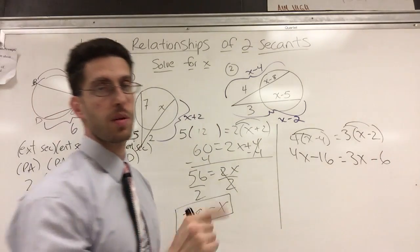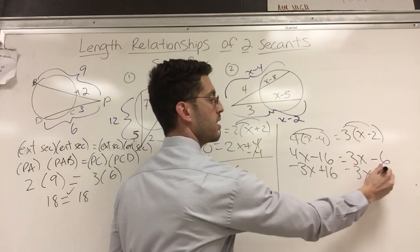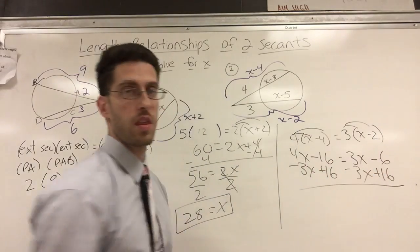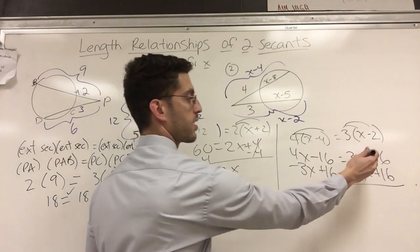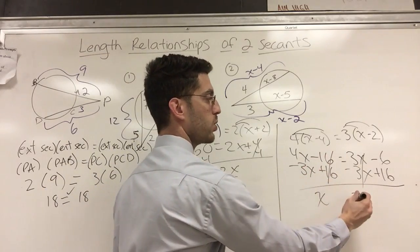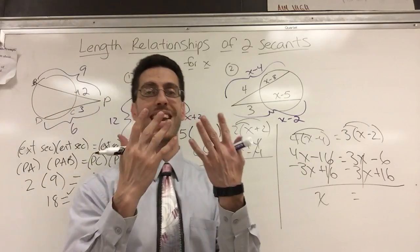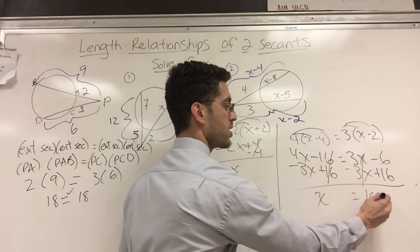We'll do this in one step instead of 2. We'll subtract 3x on both sides here. I'm going to add 16 on both sides there. What's the point of that? Let's get x alone. 4x minus 3x is 1x. 16 cancels. Equal sign drops down. Negative 6 plus 16 is 10. So my answer is 10.